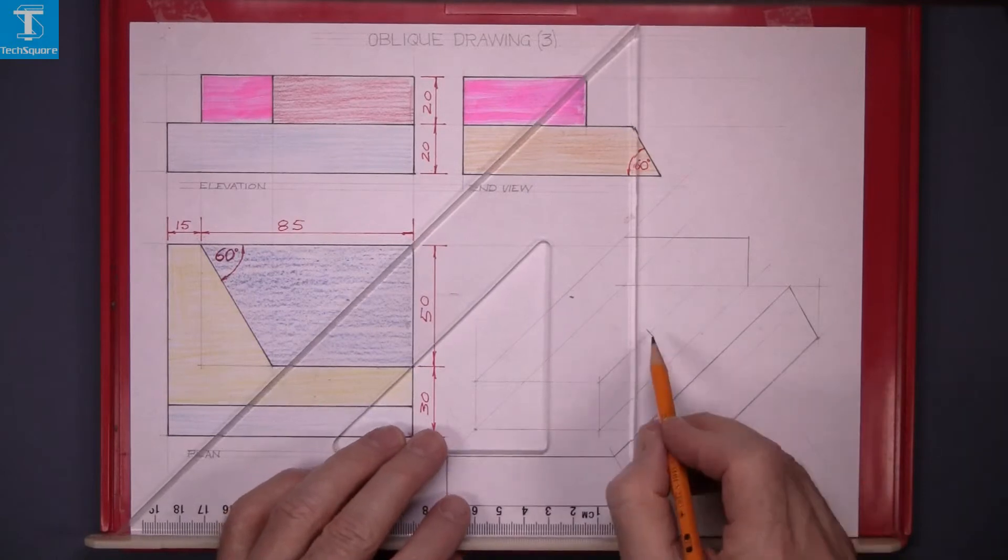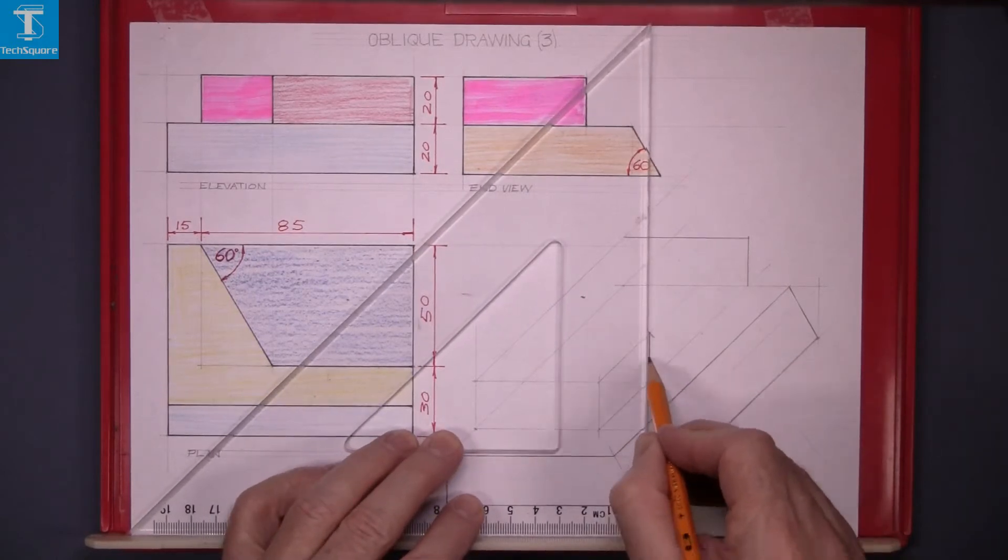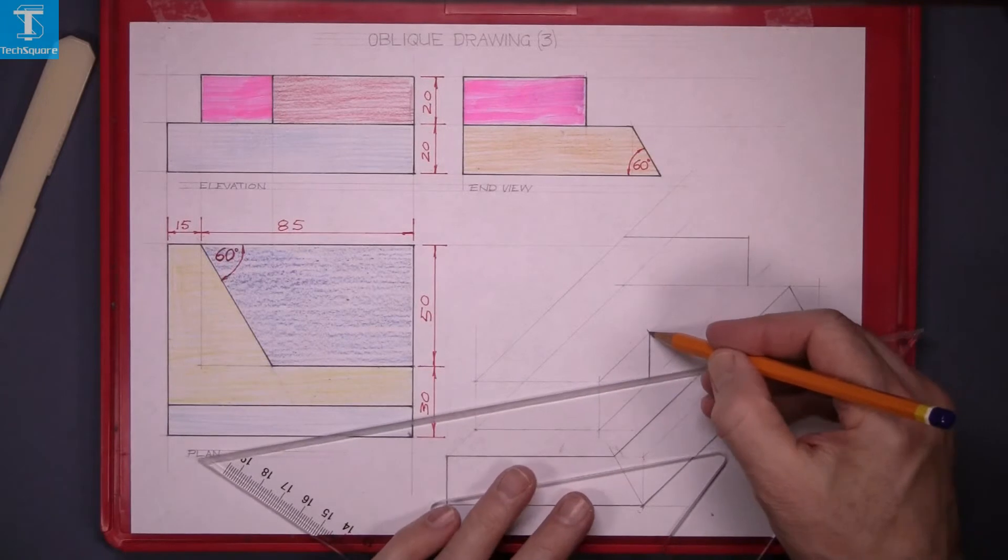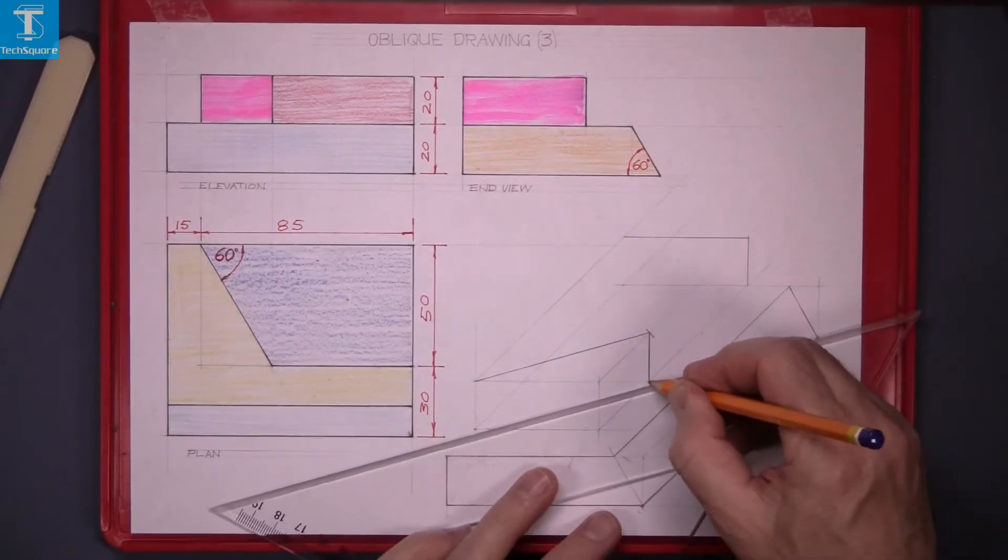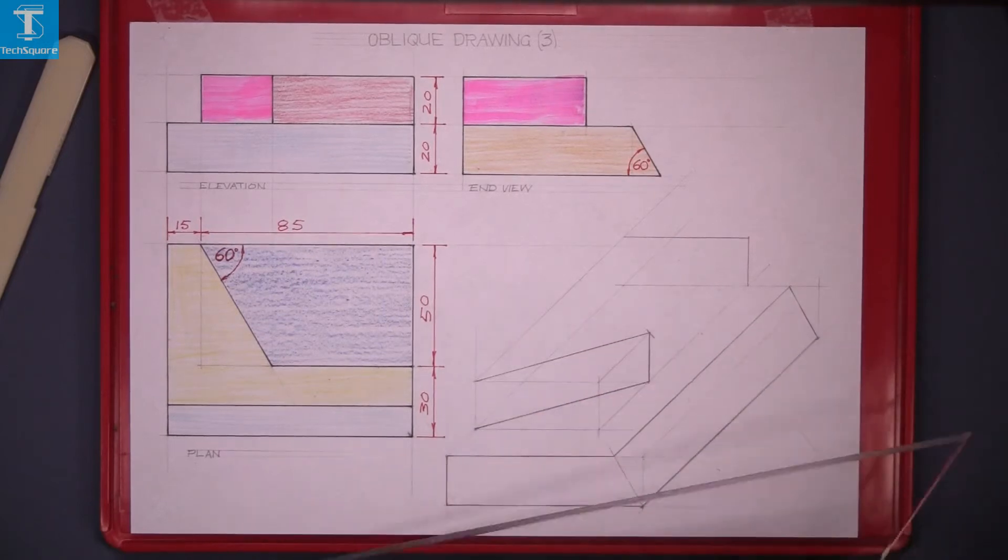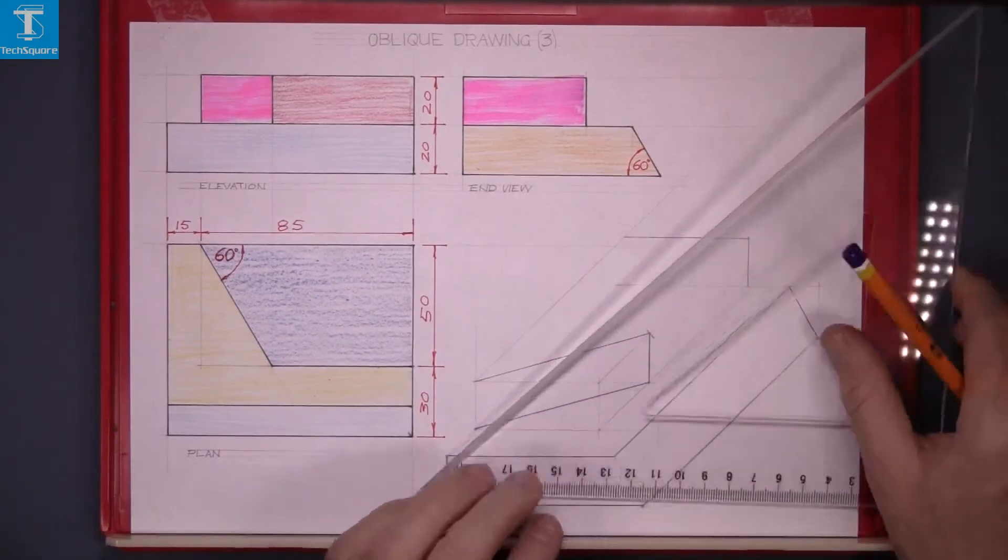And that gets the point where the cut is. Draw that straight down, and then join those two points across. And that gets the angle as we see it in this drawing.